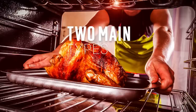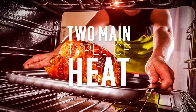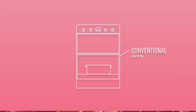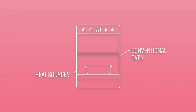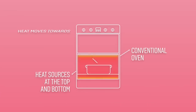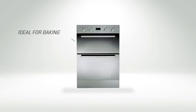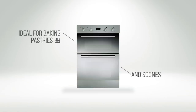When using your oven, there are two main types of heat. A conventional oven uses heat sources at the top and bottom of the oven. Heat travels to the centre of the oven by natural conduction, making them ideal for baking pastries and scones.